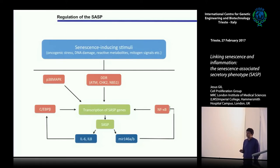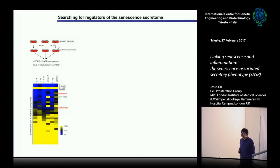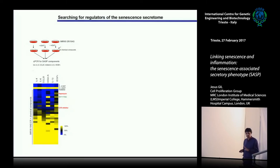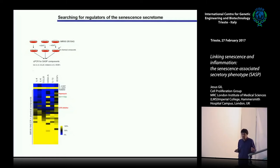This is a summary of what we know about SASP regulation. At the transcriptional level, it's controlled by NF-kappaB and C/EBP-beta, with implications of the DNA damage response, p38, and positive reinforcing feedback loops by IL-6. There is also negative regulation by microRNAs. We took a modest approach screening around 35 compounds targeting different pathways important for signal transduction in senescent cells, looking at induction of six SASP factors: IL-8, IL-6, CCL-20, inhibin-A, interleukin-1-beta, and VEGF.